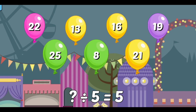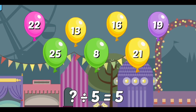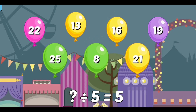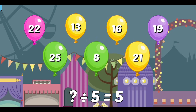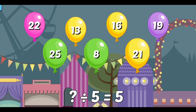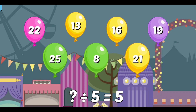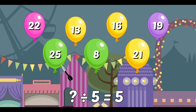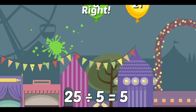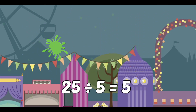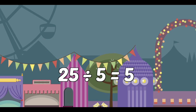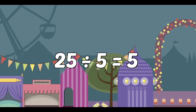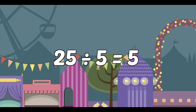What divided by 5 equals 5? Right! 25 divided by 5 equals 5.